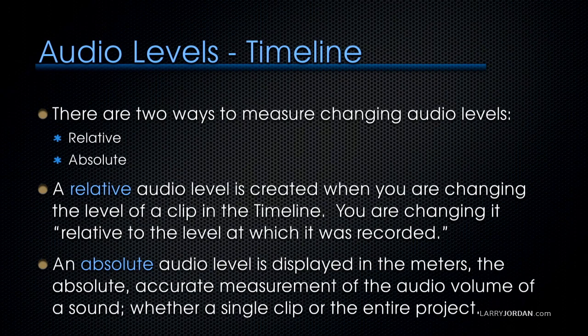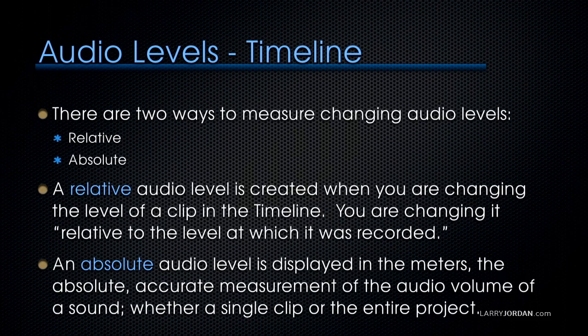There are two ways to measure changing audio levels: relative and absolute. A relative audio level is created when you're changing the level of a clip in the timeline — you're changing it relative to the level at which it was recorded. An absolute audio level is displayed in the audio meters: the accurate measurement of the audio volume of a sound, whether it's a single clip or an entire project.